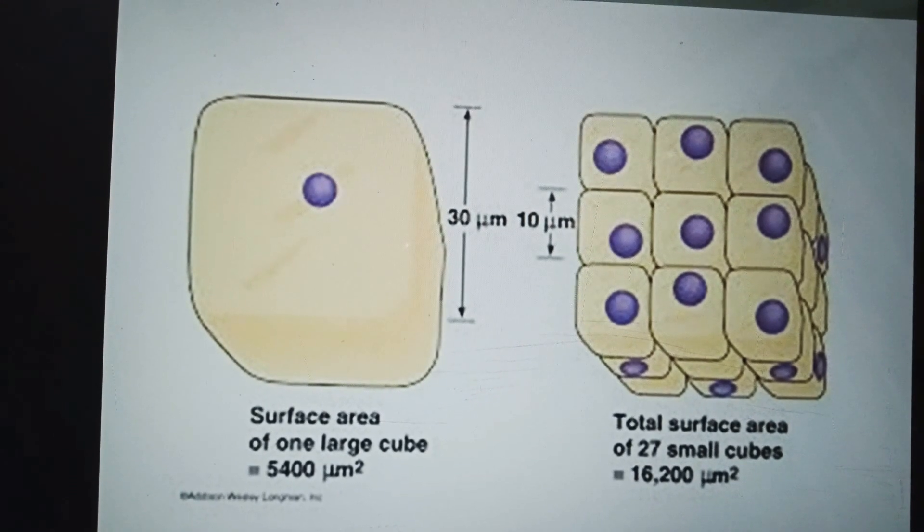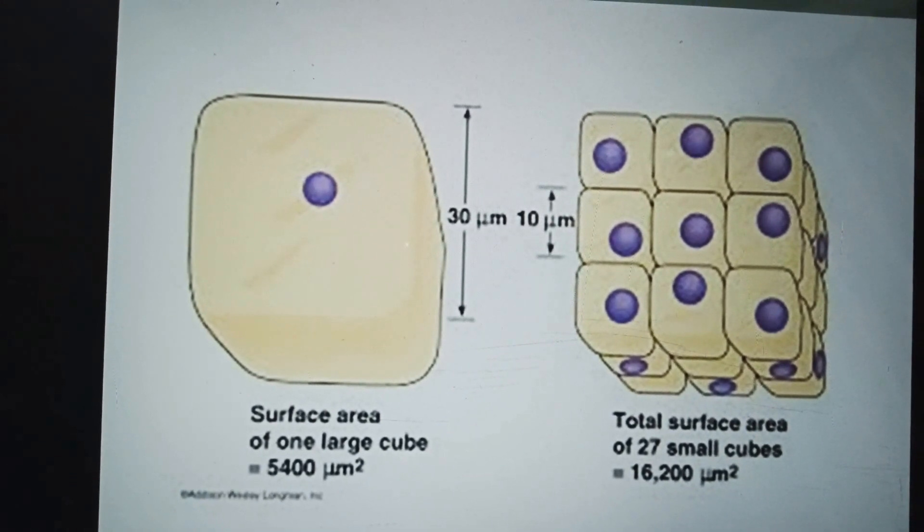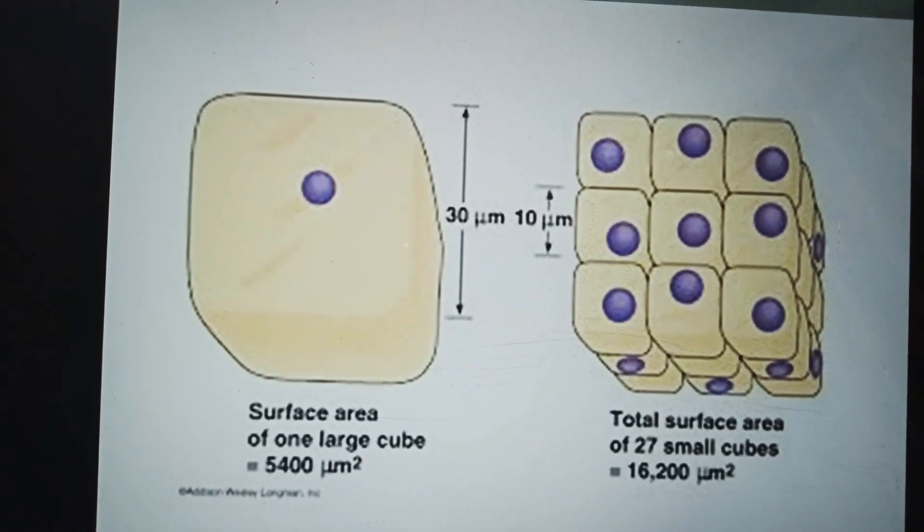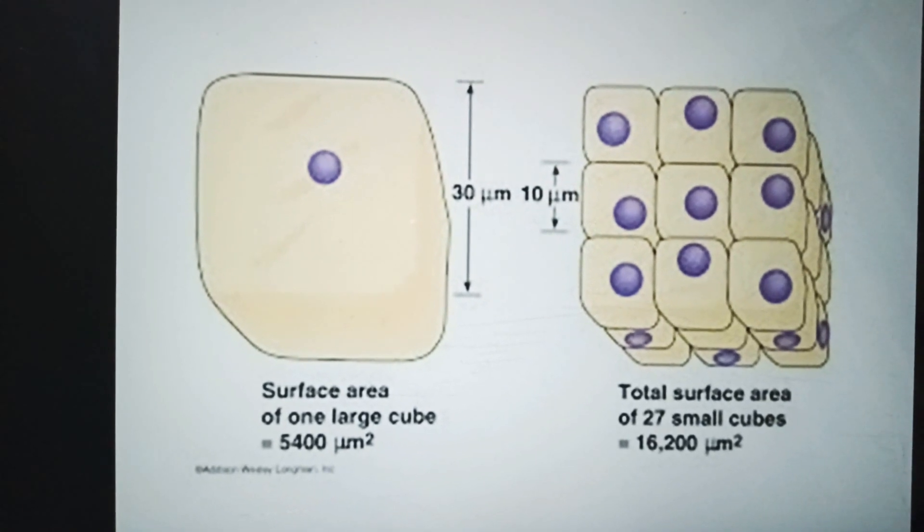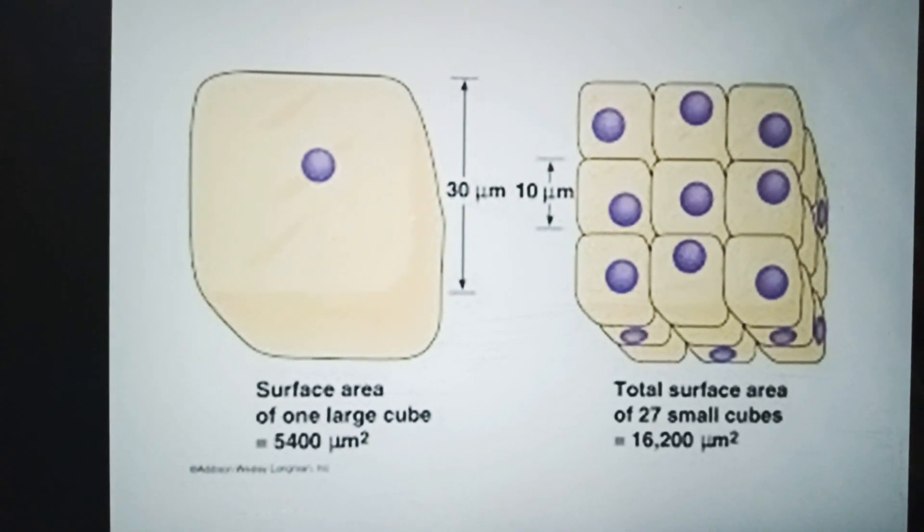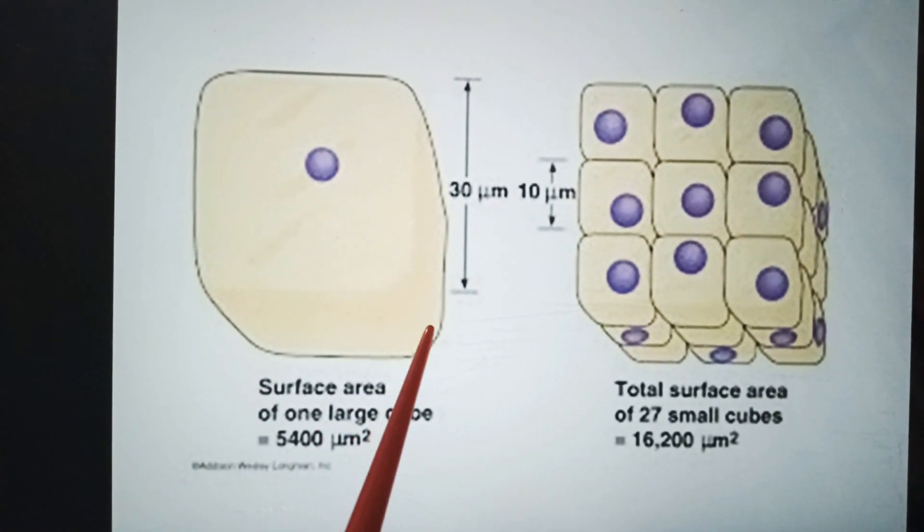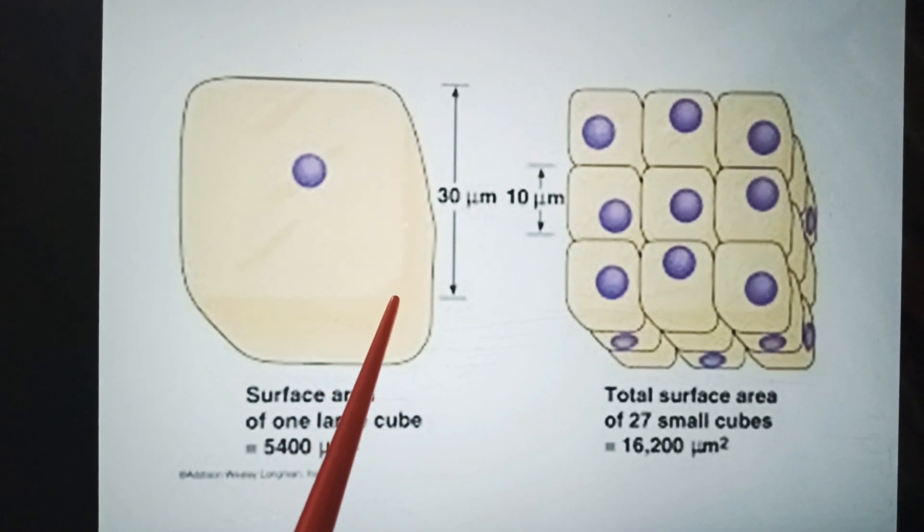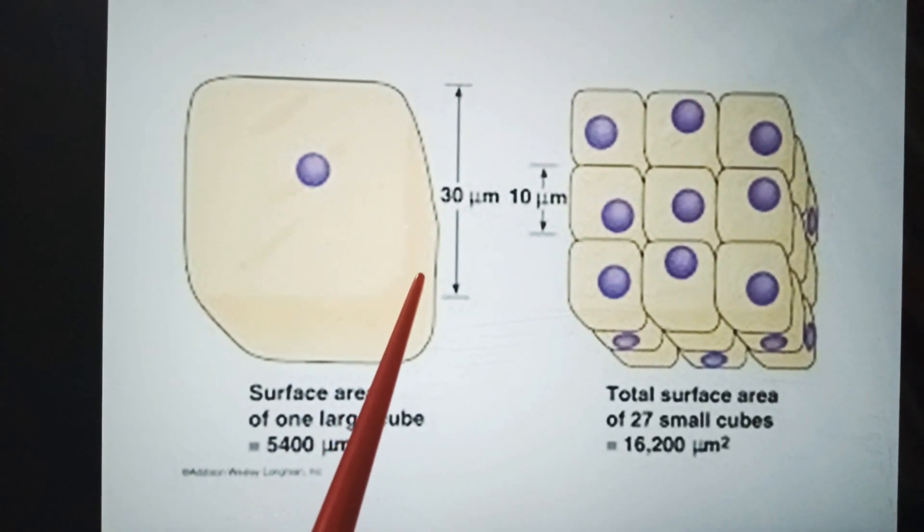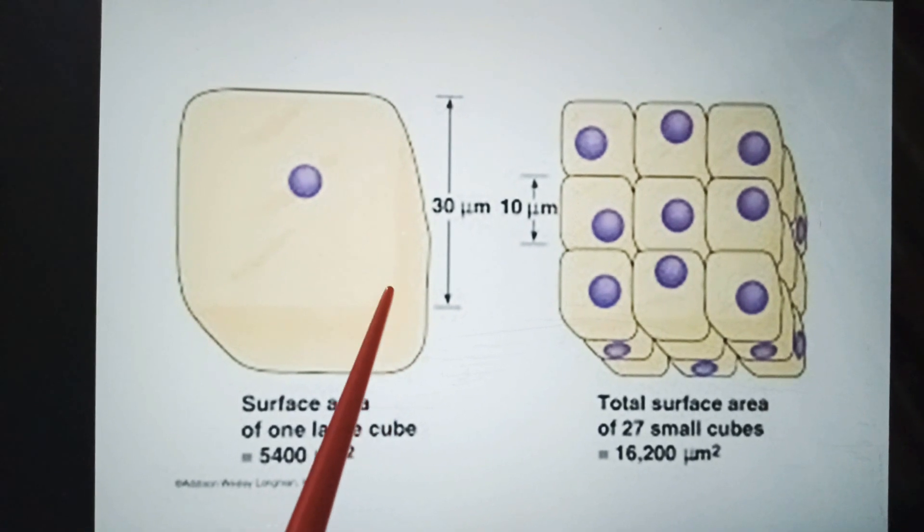This figure shows the relationship of cells which are small in size in relation to their volumes by cube shape.